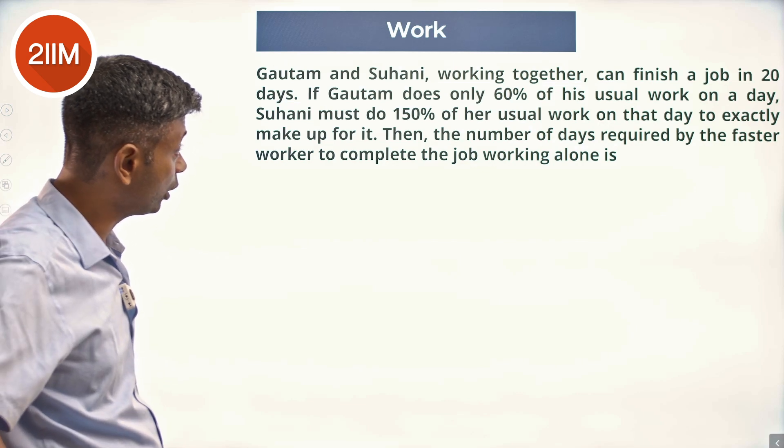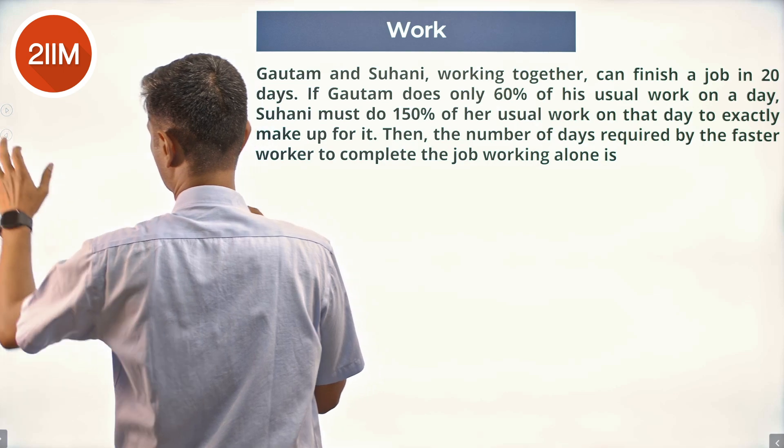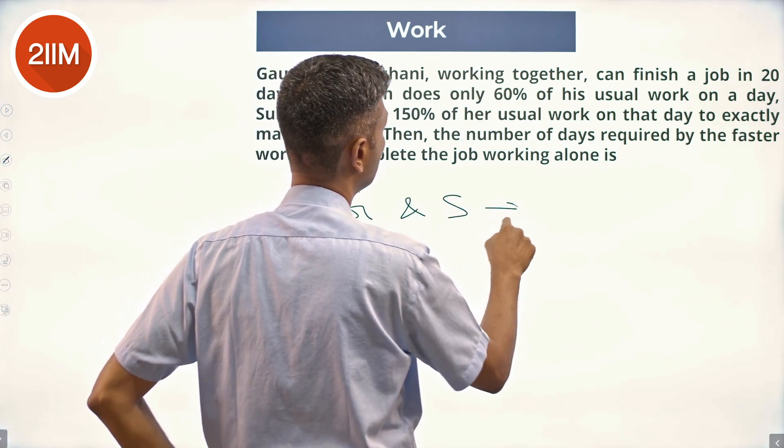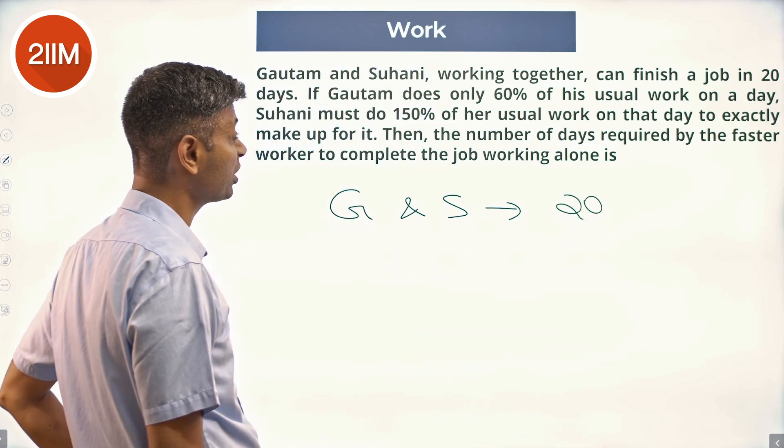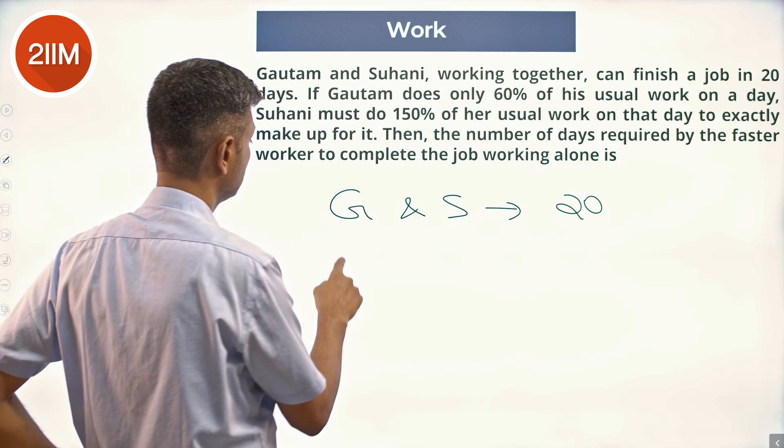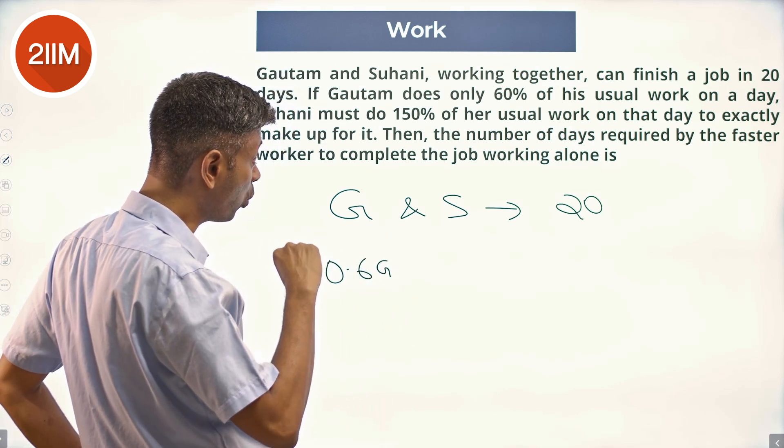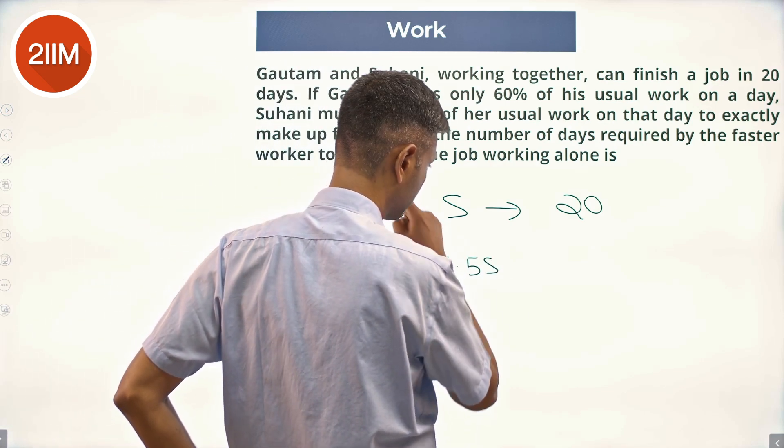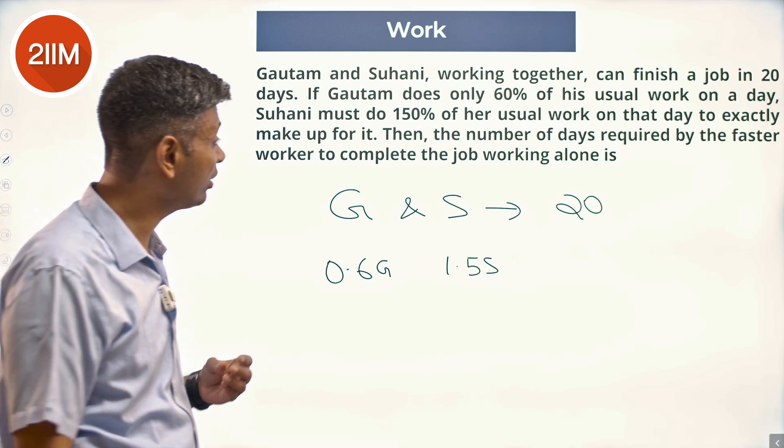Gautam and Suhani working together can finish a job in 20 days. If Gautam does only 60% of his usual work, 0.6G, Suhani must do 150% of her usual work, 1.5S, on that day to exactly make up for it. So if she brings in